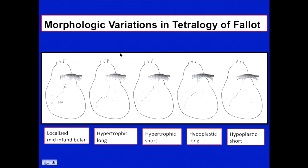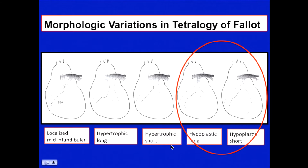When dealing with surgery for Tetralogy of Fallot, you need to understand that there are many morphological variations. Among these, those with a hypoplastic infundibulum or annulus — in this group of patients, you definitely cannot preserve the valve or the annulus. You need to do some form of a transannular patch.